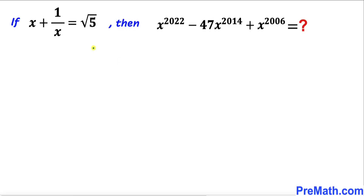Welcome to pre-math. In this video we have x plus 1 over x equal to square root of 5, and we are going to find the value of x to the power 2022 minus 47 times x to the power 2014 plus x to the power 2006.